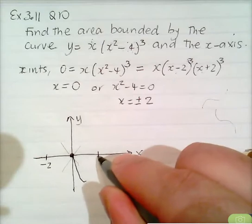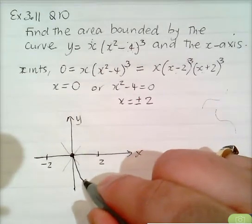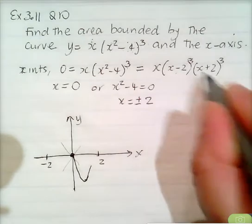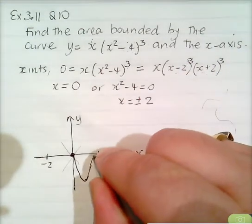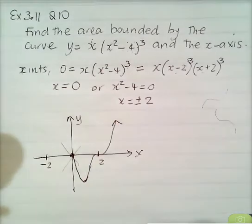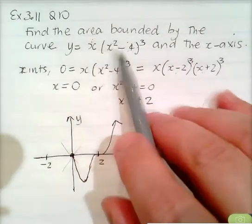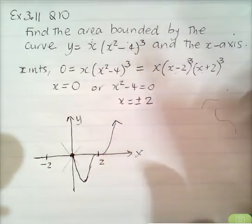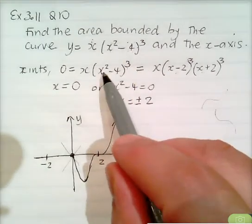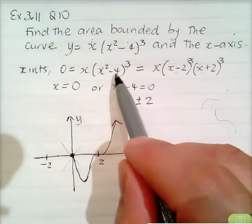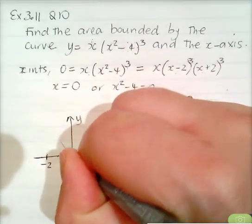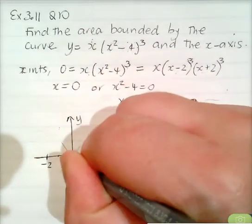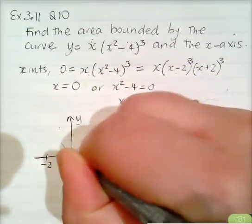We know that at x equals 2, y is 0 with a triple root. When x is negative 1: negative 1 squared is 1 minus 4 is negative 3, cubed is negative 27, times negative 1 gives positive 27. So the curve is above the x-axis between negative 2 and 0, and the sketch shows the curve inflecting through the triple roots at x equals plus or minus 2.